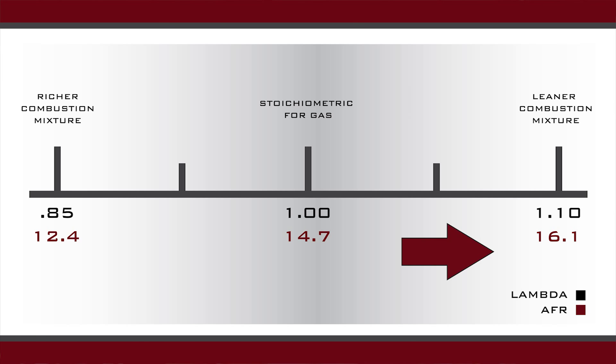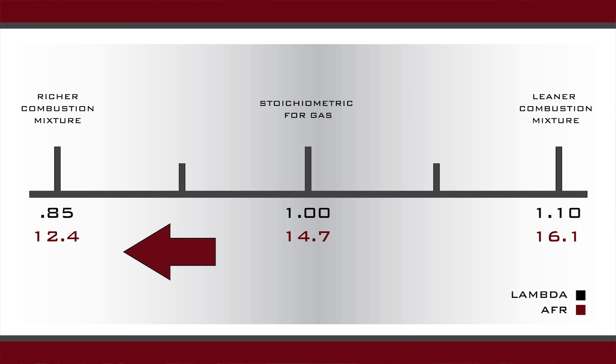Anything above a reading of 1.00 is a lean combustion mixture. Anything below a reading of 1.00 is a rich combustion mixture.